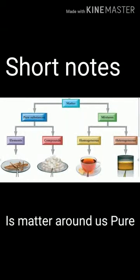Welcome to Science in Simple Steps. Today we are going to start the second chapter of Class 9th, which is 'Is Matter Around Us Pure?' How do we judge whether milk, ghee, butter, or anything else we buy from the market is pure? For a common person, pure means having no adulteration, but for scientists these things are actually mixtures of different substances.